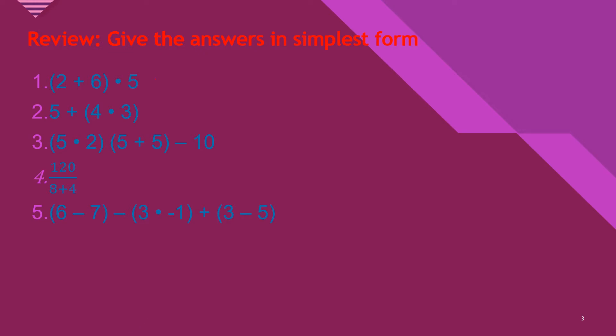So we have (2 + 6) × 5. We need to evaluate 2 + 6 which is 8, times 5, that equals 40. So always remember to do first the one in the parenthesis.